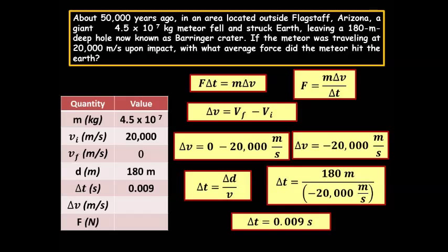Listed here is a rather complicated-looking series of calculations. I plugged in for the final velocity, which is zero, and the initial velocity, which is 20,000 meters per second. The answer to delta v is negative 20,000 meters per second.